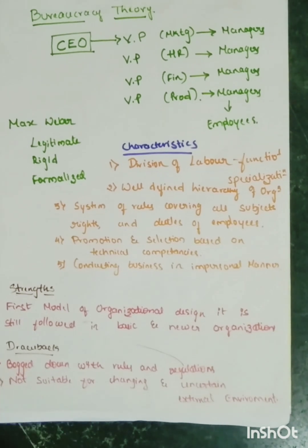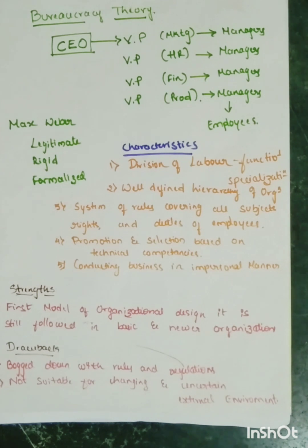Now we will understand what are the strengths and drawbacks of bureaucracy theory. The strength is that this model is the first ever model on organizational design or organizational structure, and this theory is still followed in various organizations, for example in basic or newer organizations or startups. Usually the bureaucracy model is applied.